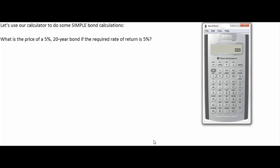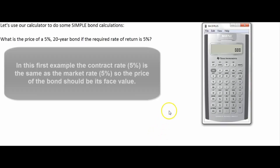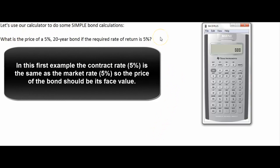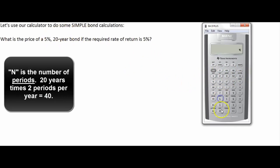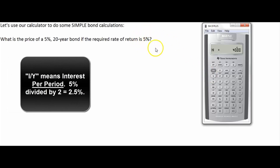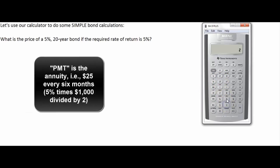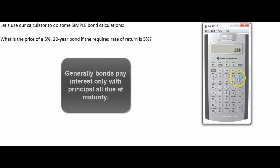Let's use our calculator for some simple bond calculations, assuming we're buying or selling right after an interest payment. For a five percent twenty-year bond with a required rate of return of five percent, the price should be a thousand dollars. Since all payments are the same we can stay in the standard row. N equals forty (twenty years times two payments per year); I equals 2.5 (five percent divided by two); PMT equals twenty-five dollars (five percent times one thousand divided by two); FV equals one thousand. We compute PV and sure enough it's a thousand dollars.